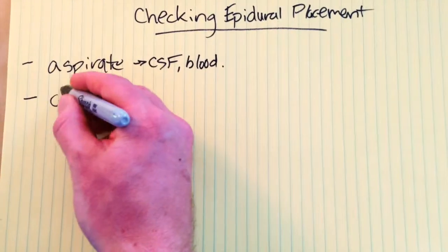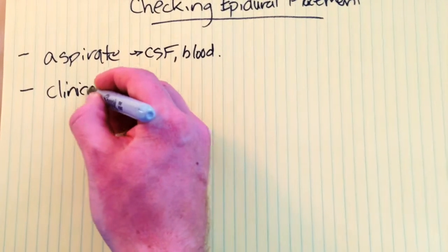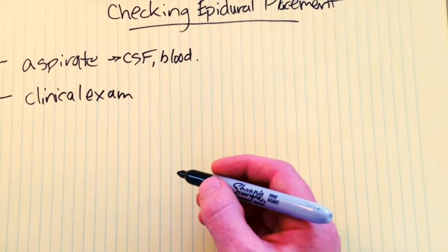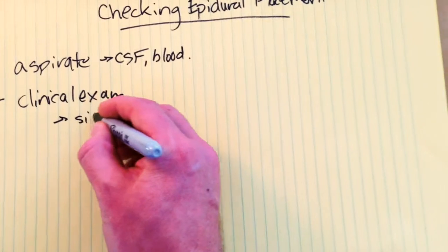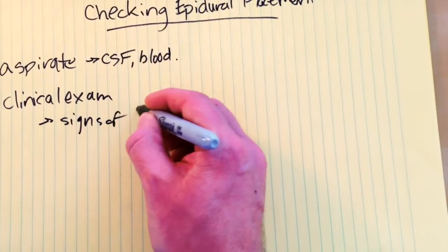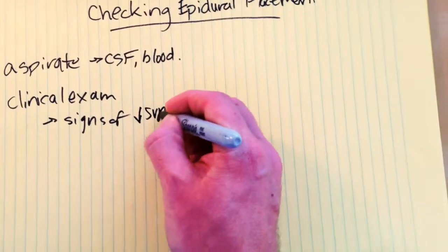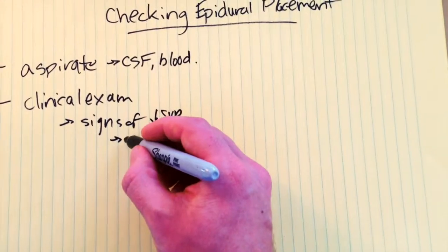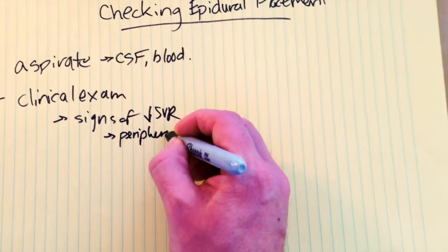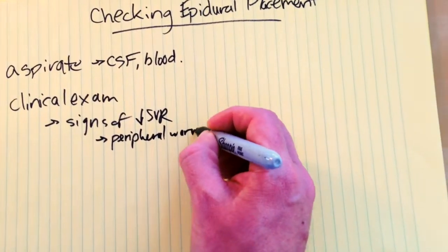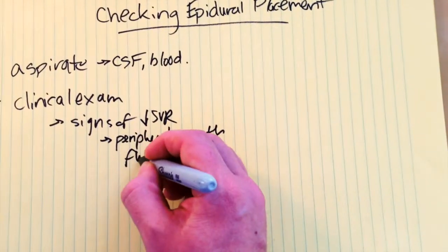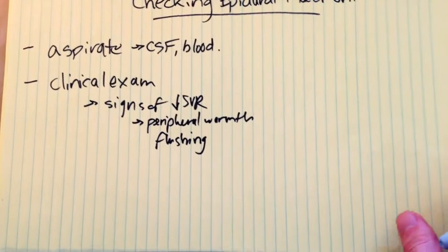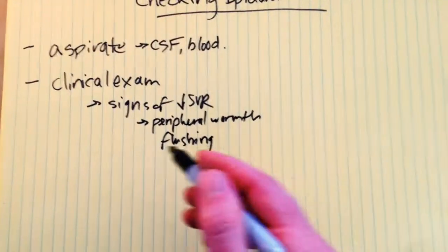Another thing you can do is a clinical exam, and you're probably going to do this anyway as part of your evaluation of hypotension. But you're looking essentially for signs of decreased SVR — so that's going to be peripheral warmth, flushing, anything that makes you think there's systemic vascular resistance decrease that's out of the ordinary or not normal.